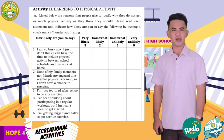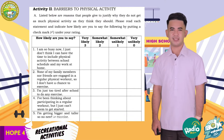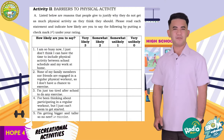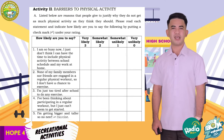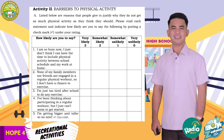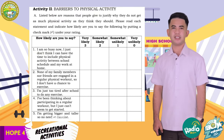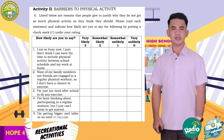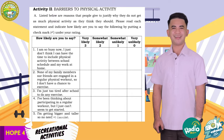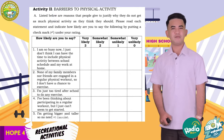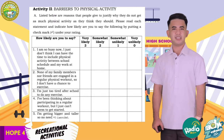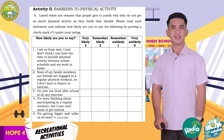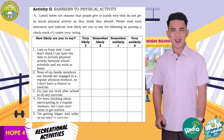Let us proceed to Activity Number Two: Barriers to Physical Activity. Listed are reasons that people give to describe why they do not get as much physical activity as they think they should. Please read each statement and indicate how likely you are to say each of the following by putting a checkmark under your rating. How likely are you to say: I am so busy now, I just don't think I can't have the time to include recreational activity between school schedule and my work at home. Is it very likely, somewhat likely, somewhat unlikely, or very unlikely?